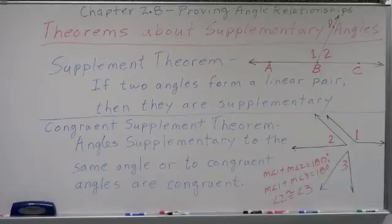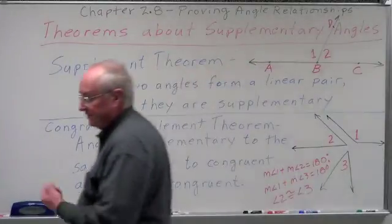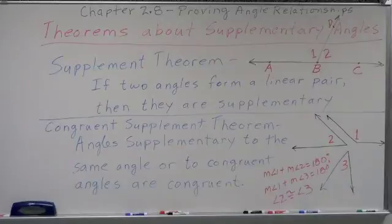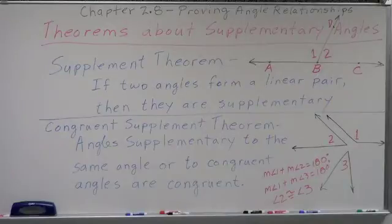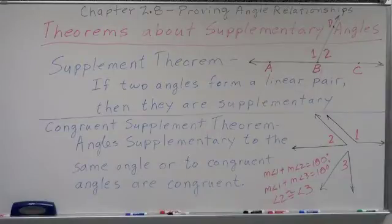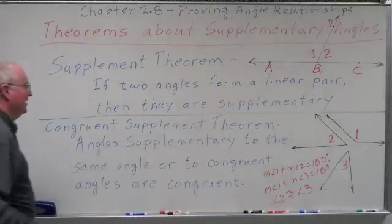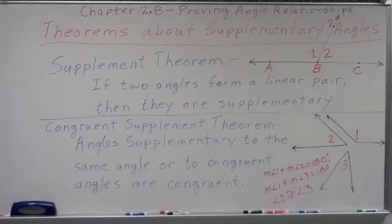The next group of theorems we want to introduce are theorems that have to do with supplementary angles — the relationship of supplementary angles. The first one is called the supplement theorem. It's actually a fairly difficult theorem to prove. It seems rather intuitively obvious, and some places simply call it the linear pair postulate. However, it is widely accepted as the supplement theorem. Its statement is: if two angles form a linear pair, then they are supplementary.